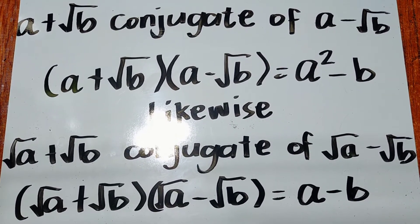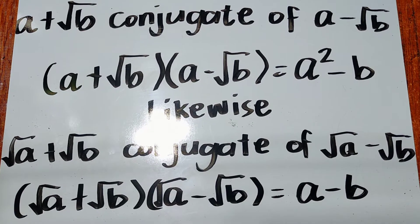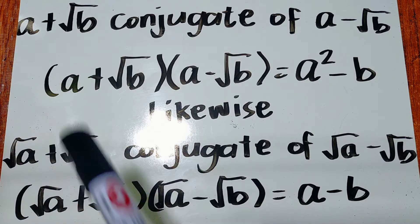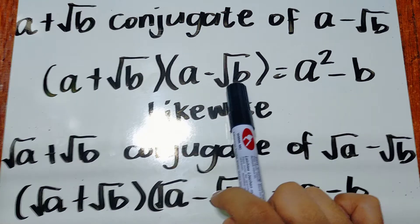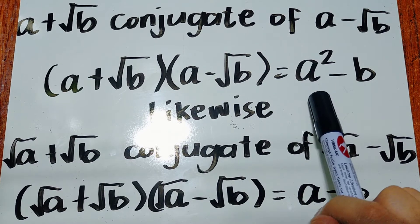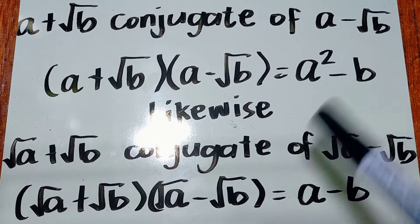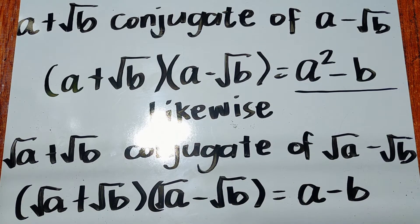So, a plus square root of b is the conjugate of a minus square root of b. When we multiply them together, a plus square root of b times the quantity a minus square root of b equals a squared minus b. Remember this.